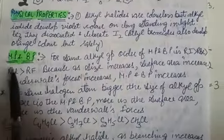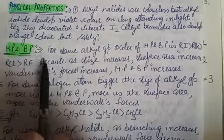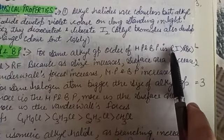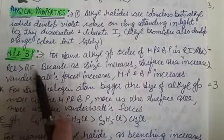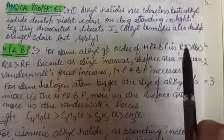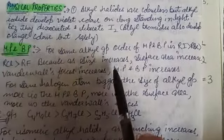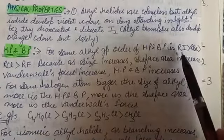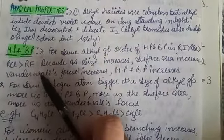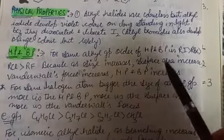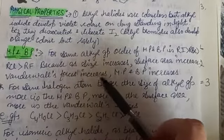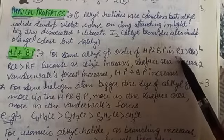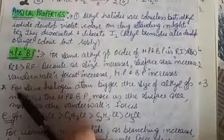The second point — melting point and boiling point — is very important because questions come from it. If the alkyl group R is the same, and we compare RI, RBr, RCl, and RF, what differs is the halogen. As we move down the group, the size increases, and the melting point and boiling point will increase. So iodide has the highest melting and boiling point, then bromide, then chloride, then fluoride.